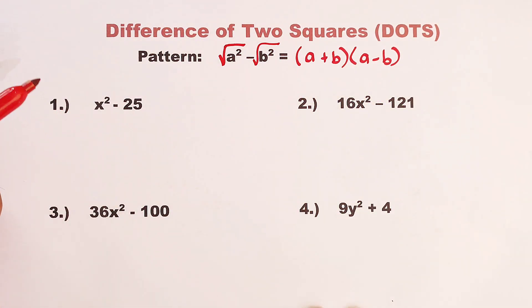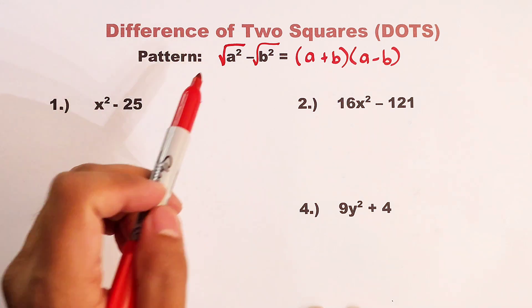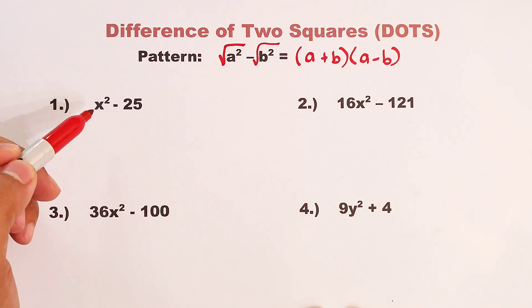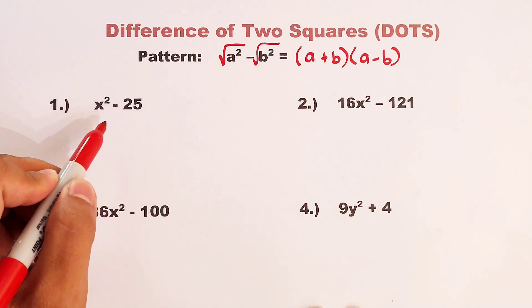So let's go with item number one to use this pattern. We have x squared minus 25. Basically guys, we can use this pattern if the first term is a perfect square and the second is a perfect square also. And lastly, if we have the subtraction sign between the two perfect squares.